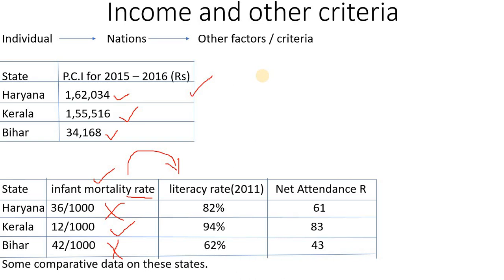If you understand the literacy rate in the country: there is 82% literacy in Haryana, 94% in Kerala, and 62% in Bihar. Kerala is clearly a leader here.